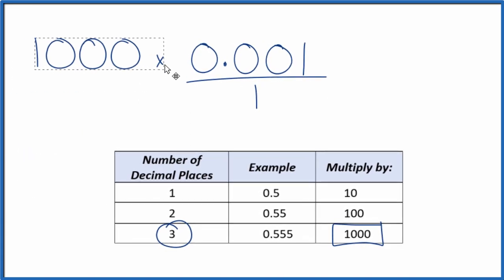So we take a thousand and we multiply that by 0.001, and that gives us just one. But we can't just multiply the numerator here by a thousand. We also need to multiply the denominator by a thousand.